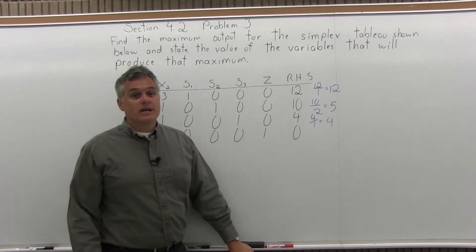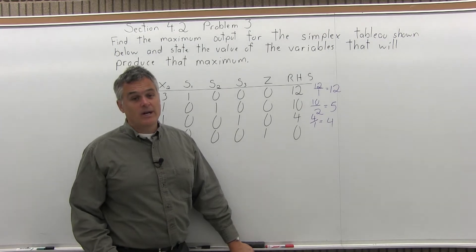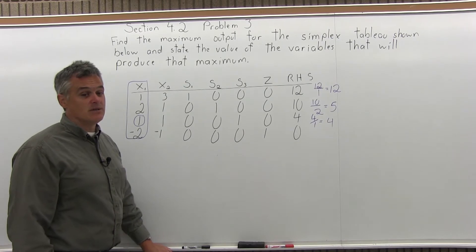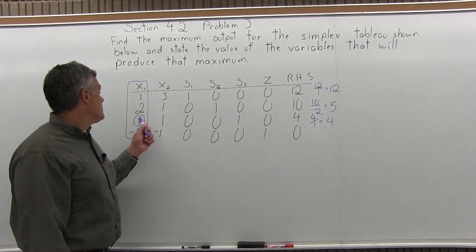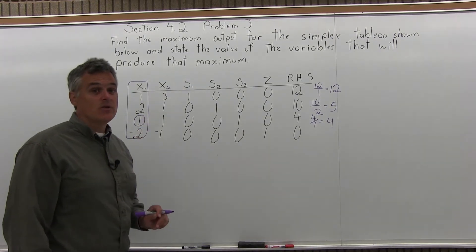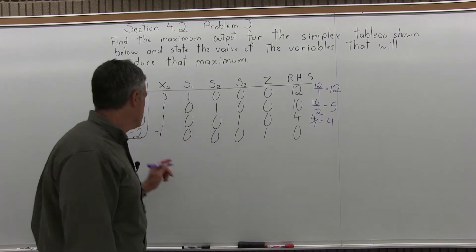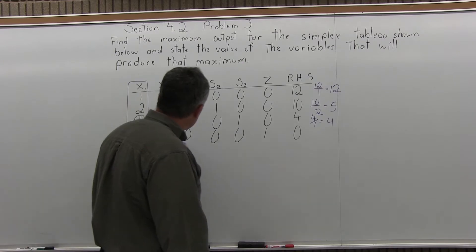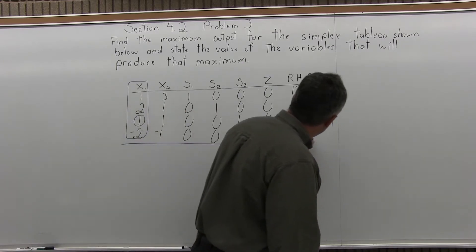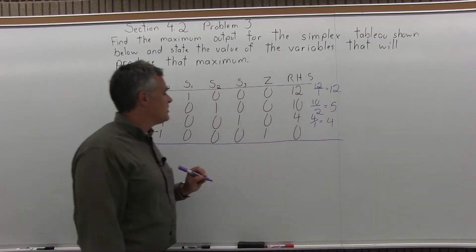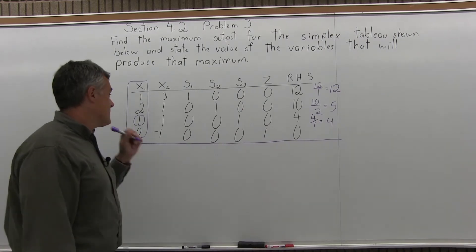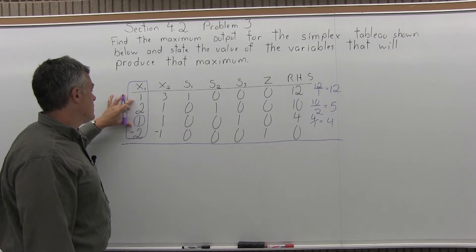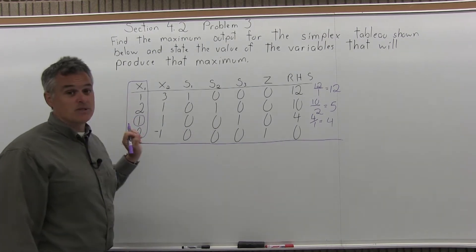In order to pivot a matrix, we turn the pivot element into a 1 and then turn the rest of the pivot column into 0s. Just by a little bit of good luck, the pivot element is already a 1, which saves us some work. So I'll put a line under the initial tableau and start the next matrix. I want to zero out all of the x1 column except the 1 in the third position.